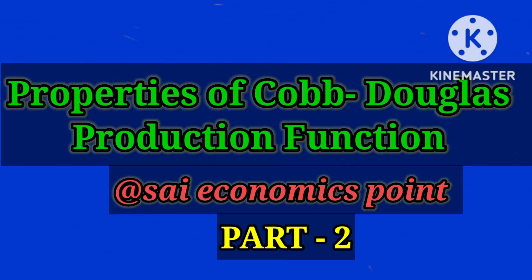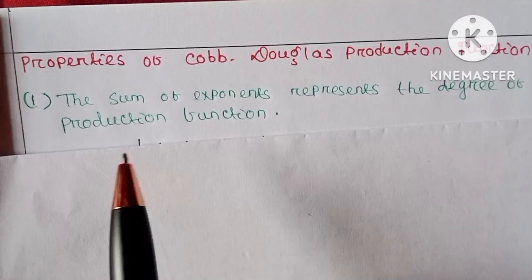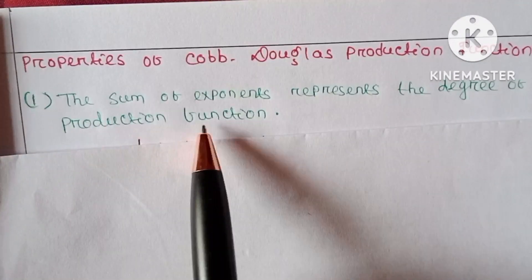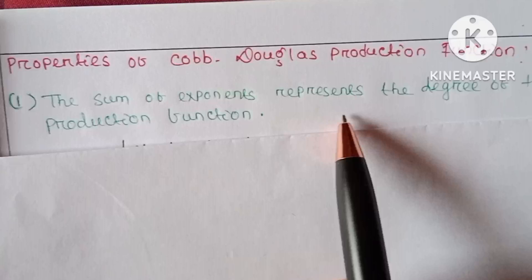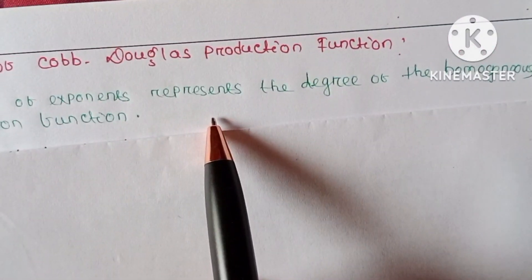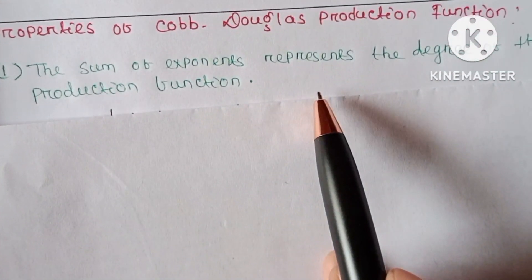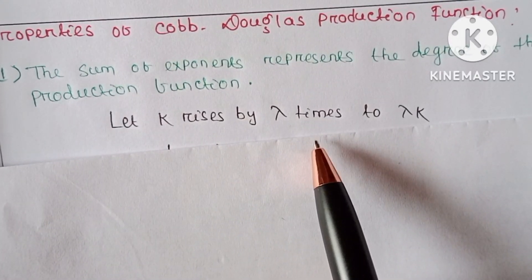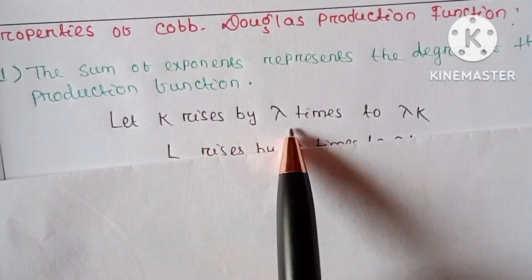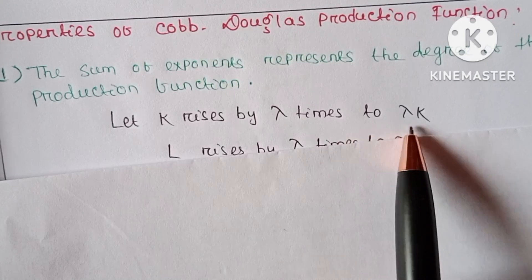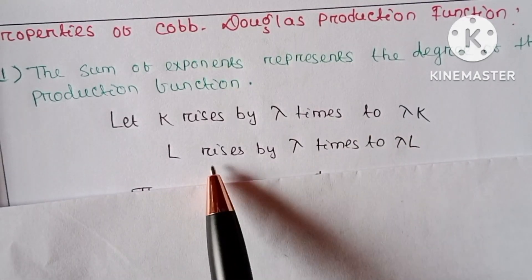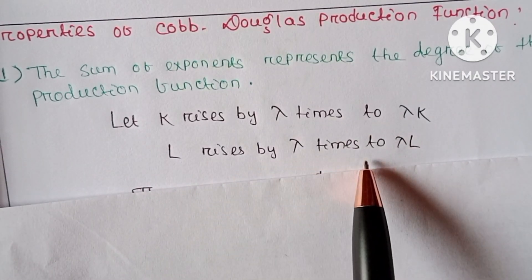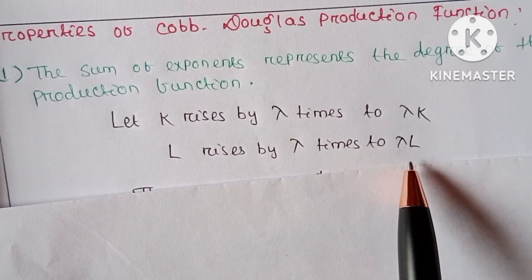Namaste, welcome to Sci-Economics Point. In today's video we will discuss properties of the Cobb-Douglas production function. Let K rise by lambda times so it becomes lambda into K, and let L rise by lambda times so it becomes lambda into L.